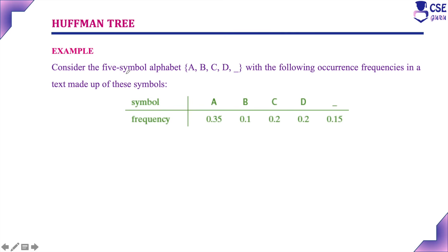Consider a five-symbol alphabet A, B, C, D, and underscore with the following occurrence frequencies in a text made up of these symbols. For symbol A, frequency is 0.35; B is 0.1; C is 0.2; D is 0.2; and underscore is 0.15.